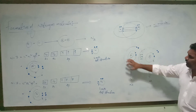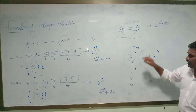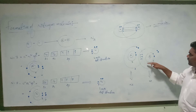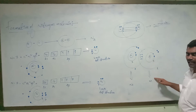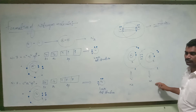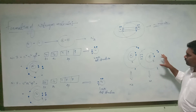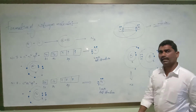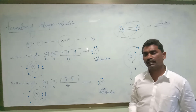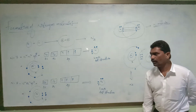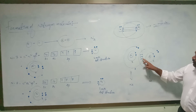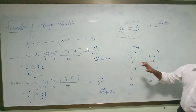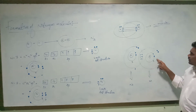By having a total of ten electrons, the nitrogen atom is getting the electronic configuration of neon. Neon is the inert gas element whose electronic configuration has eight electrons in the last orbit. By having eight electrons in the last orbit of nitrogen, it achieves the neon configuration and becomes stable. So both nitrogen atoms are stable.